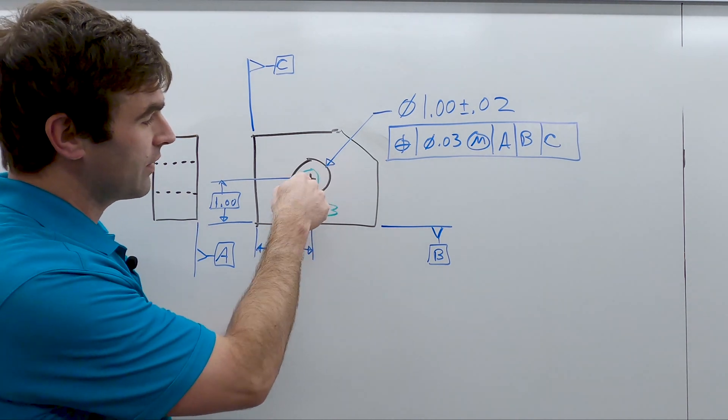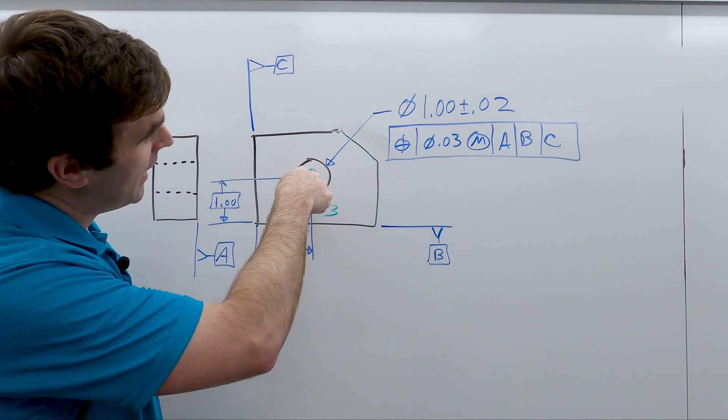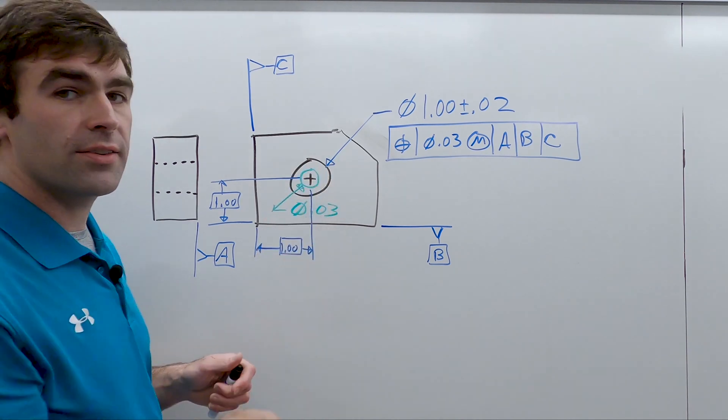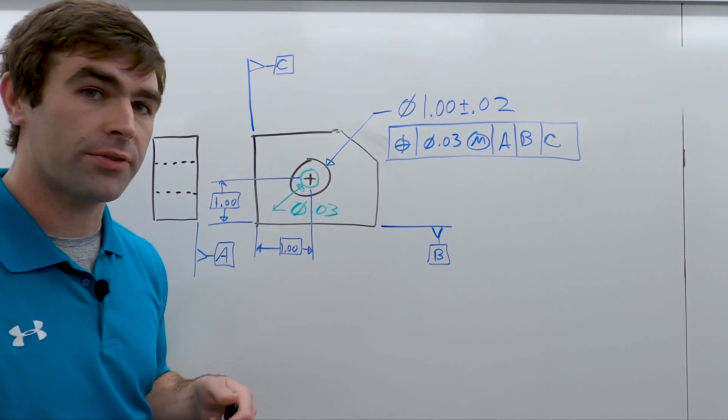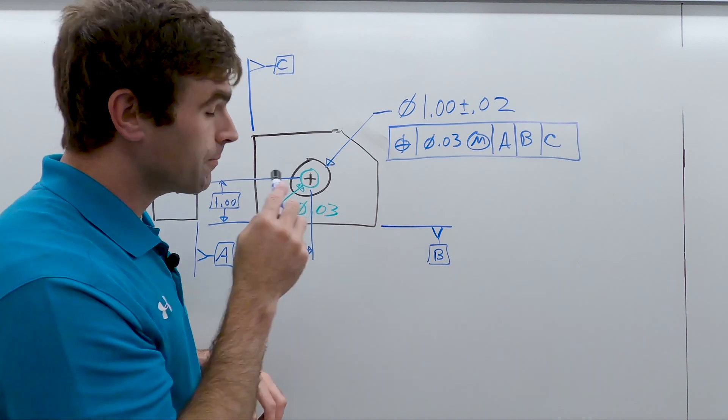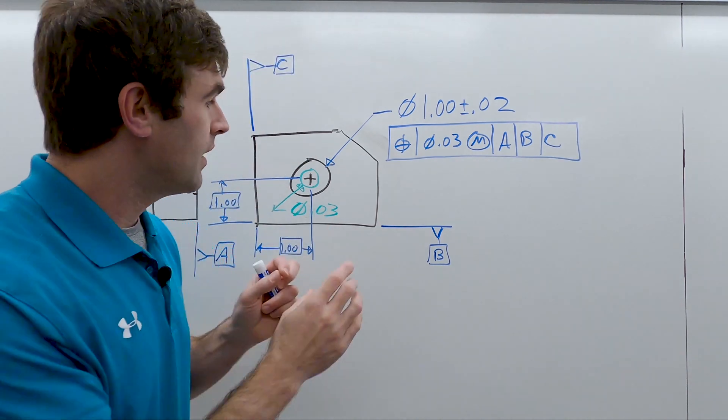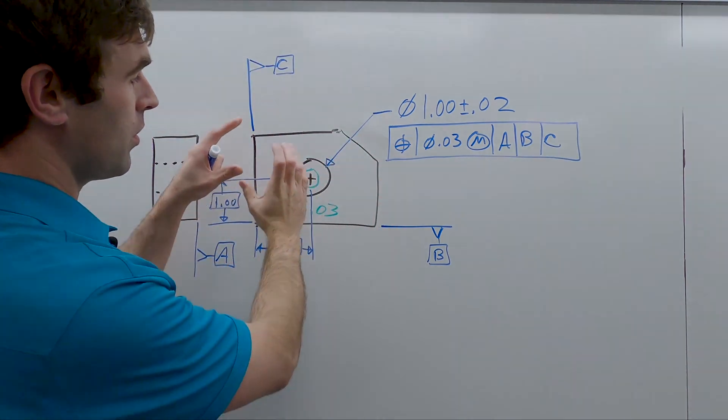So the actual axis of the hole that is made has to fall within this 30 thousandths, but only at MMC. If the hole comes in big, it can wander around.